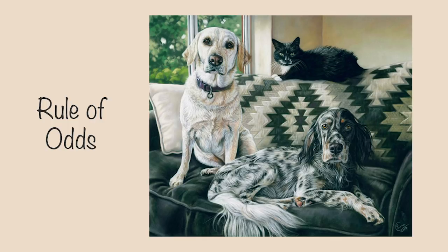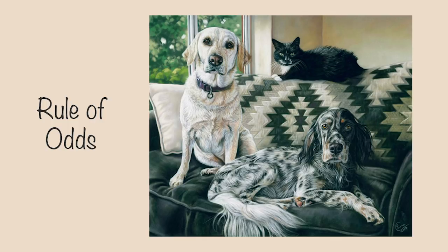Next it's the rule of odds. Now you don't always get to decide — if you're doing a portrait that has two or four subjects in it — but when you can, it's always good to use an odd number of subjects. Apparently our eyes like to make groups of things, and when there's an odd number it keeps us looking from one subject to the next. I find that especially in this portrait, our eye can do a nice circular motion around the three characters.